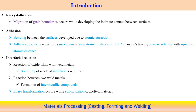In recrystallization, grain boundary migration develops and interconnects grains between the two components. New grains form through recrystallization by grain boundary migration. Adhesion bonding occurs between the two surfaces due to atomic attraction. The inter-atomic distance is approximately 10⁻¹⁰ m, where the atomic adhesion force is maximum, having an inverse relation with the square of the atomic distance. When this distance is reached, adhesion occurs between the two components.